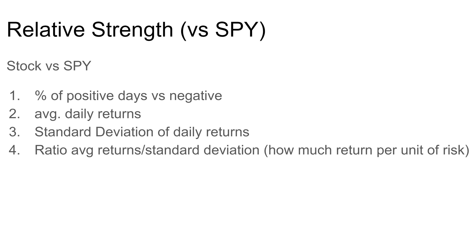We're going to look for a few different things. First, we're going to compare, during our test period, the percent of days that the stock had positive moves versus the percent of days SPY had positive moves. So if we looked at the last 10 days and SPY was up six out of ten days, we'd want that stock to show it was up at least six or more days in the same period.